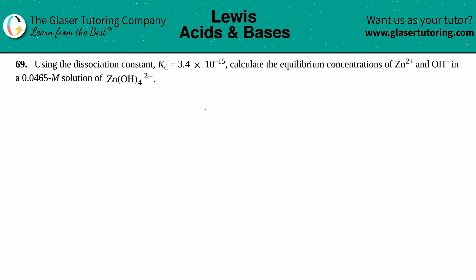Number 69: using the dissociation constant Kd which equals 3.4 times 10 to the negative 15th, calculate the equilibrium concentrations of the zinc ion Zn²⁺ and the hydroxide ion OH⁻ in a 0.0465 molarity solution of Zn(OH)₄²⁻.